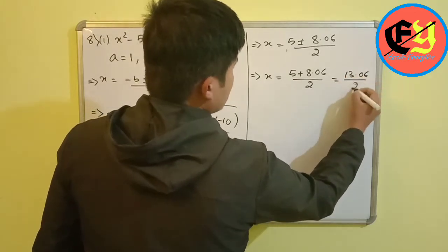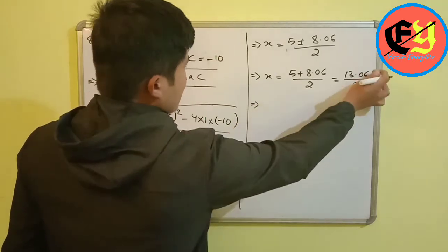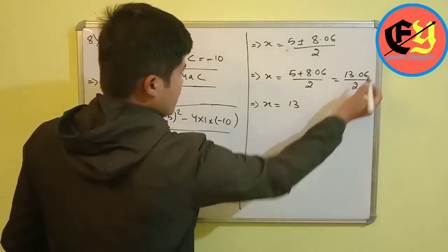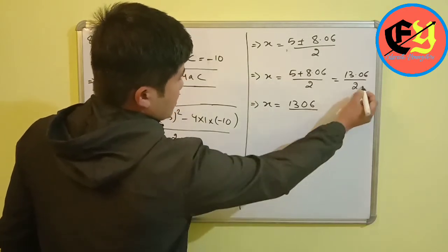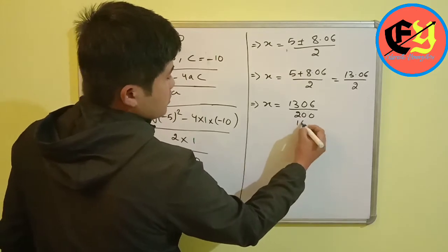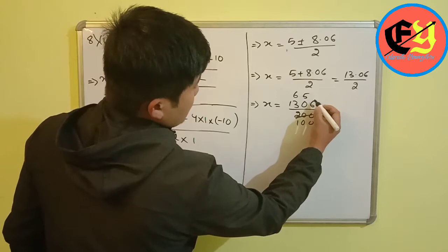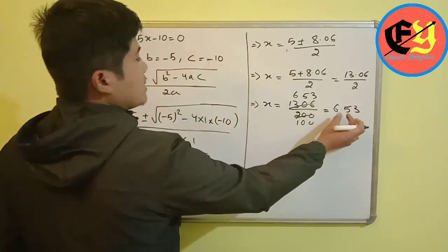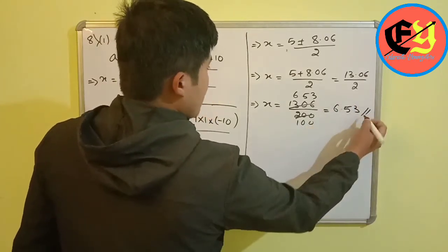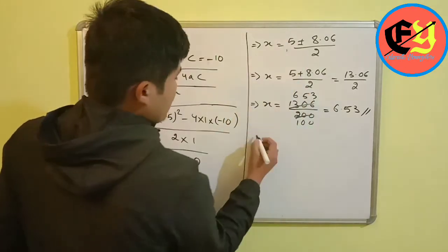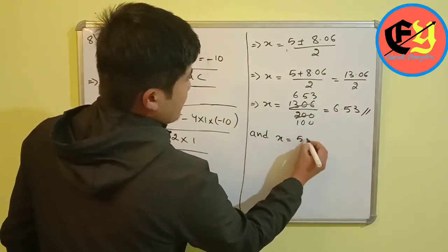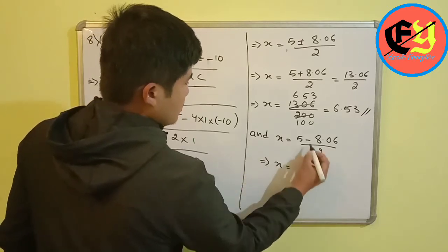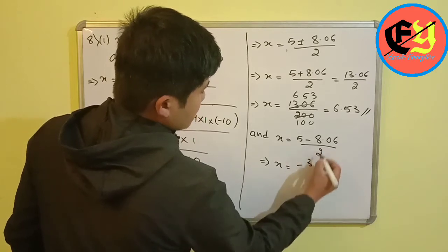For the first value: x equals (5 plus 8.06)/2 equals 13.06/2 equals 6.53. For the second value: x equals (5 minus 8.06)/2 equals minus 3.06 divided by 2.